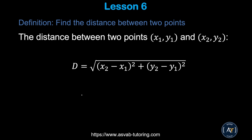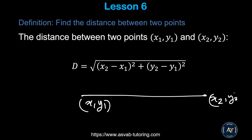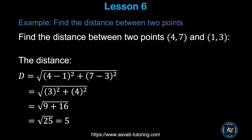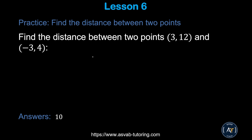Now we'll learn how to find the distance between two points (x1, y1) and (x2, y2). The formula is: d = √[(x2 − x1)² + (y2 − y1)²]. Let's apply it: find the distance between (4, 7) and (1, 3). That gives √[(4−1)² + (7−3)²] = √[9 + 16] = √25 = 5. So d = 5.